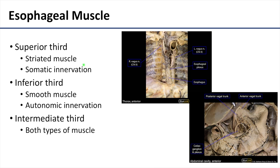Before we get into the neurovasculature of the esophagus, I want to talk about how there are different muscle types associated with the esophagus, and that's quite different from what you have for the rest of the GI tract. The superior third of the esophagus is actually striated muscle, which is similar to what we had with the pharynx. And we know that all striated muscle will have somatic innervation — so that's also different from what you have for the rest of the GI tract.